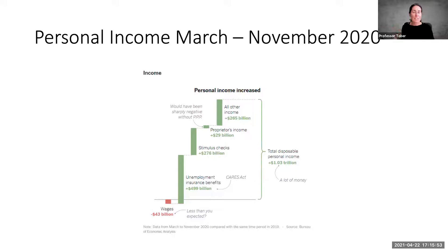You had income from stimulus checks, proprietor's income — which would have been negative without the Paycheck Protection Program — and all other income. If you look at wages, you see negative $43 billion, which is a lot, but maybe less than you'd expect. Everything was shut down from March through November — restaurants, travel, services. Millions were out of work. So how is something like this possible?